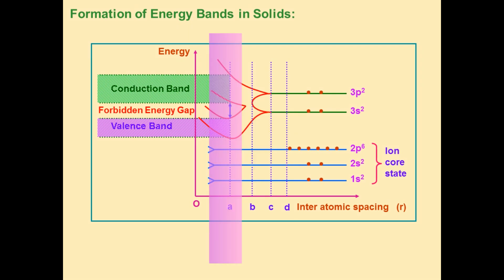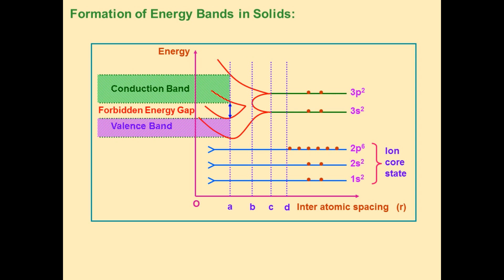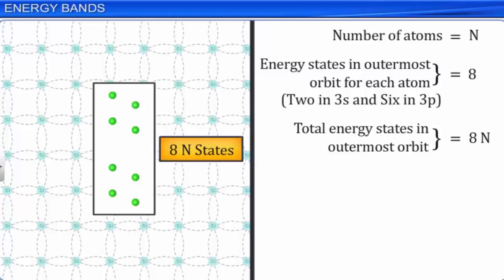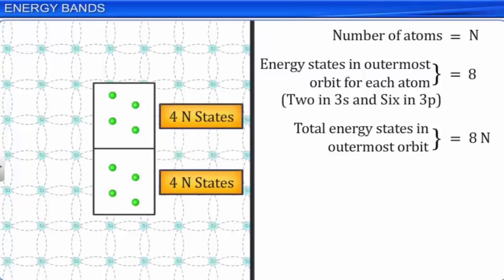The final state is when r equals OA, highlighted in the graph — the interatomic distance decreases even further. Because of strong interactions, the band of 4n filled energy levels separates from the 4n unfilled energy levels, as indicated by the blue arrow in the graph. There is an energy gap between these two bands, specially named the forbidden energy gap. Among the total 8n states, they are divided into two parts of 4n states each.